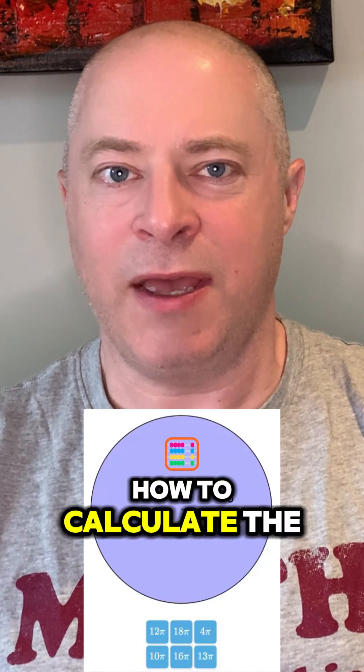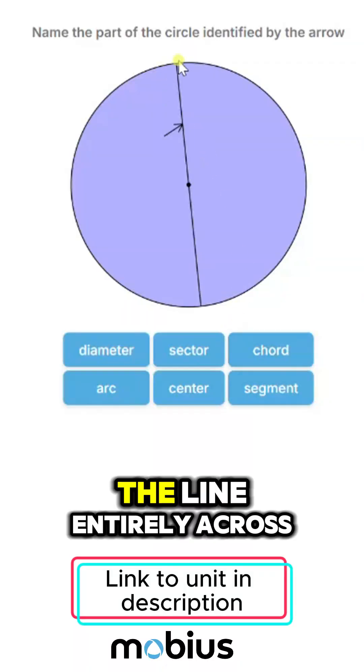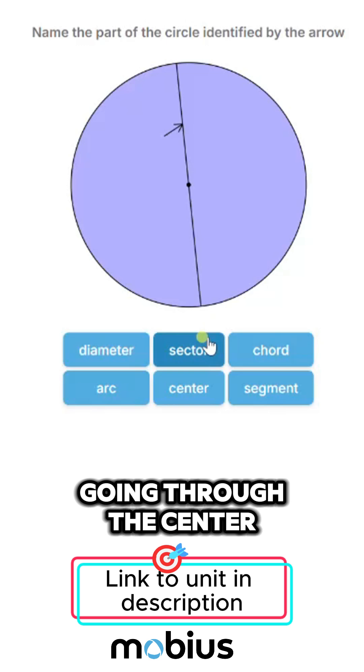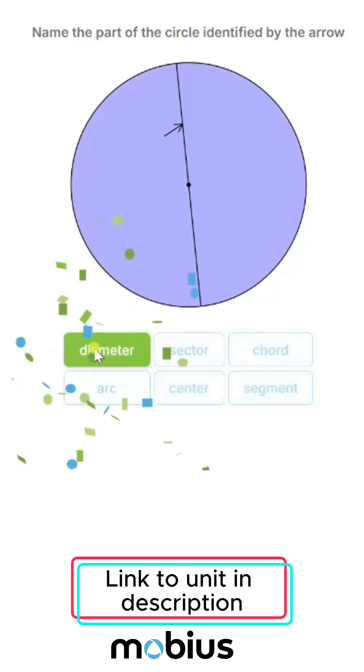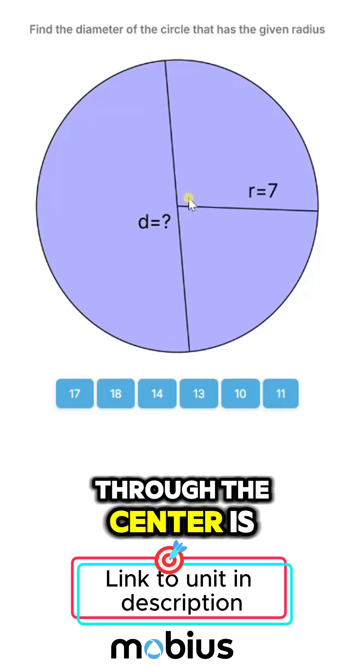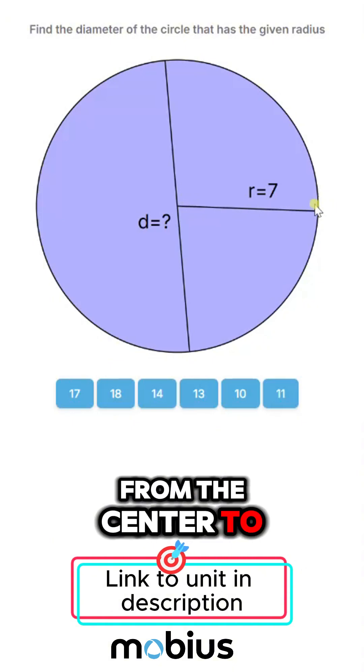Let's review how to calculate the circumference of a circle. The line entirely across the circle going through the center is called the diameter. The diameter of a circle is always twice the radius, which is the line from the center to the edge.